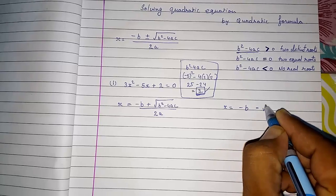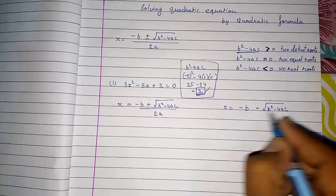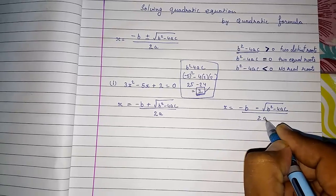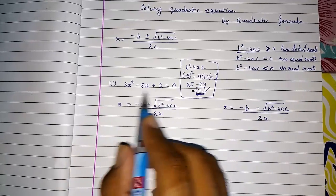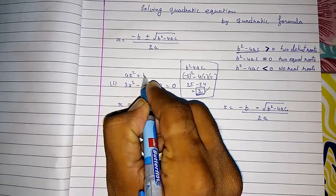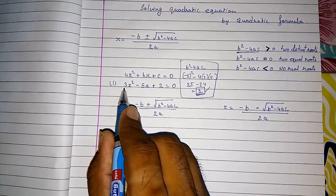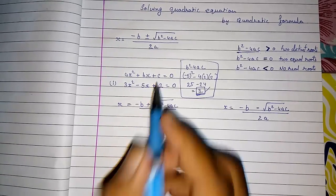x equals minus b plus or minus under root b square minus 4ac by 2a. I think you know what are a, b and c. Still I am writing the standard form ax square plus bx plus c equals 0. So you come to know this is a, this is b and this is c.